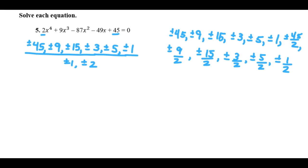Now, it would take me forever to go through each of those and test them out. So what I'm going to do is just show you a couple and how they work out. So if we were to put in 1, what we would find is, if I put down my coefficients, we have 2, 9, negative 87, negative 49, and 45. Bring down the 2,